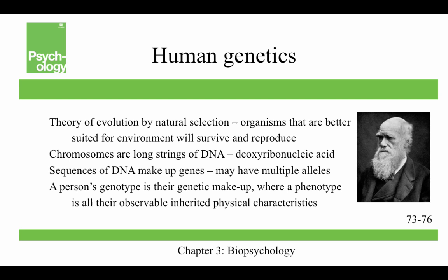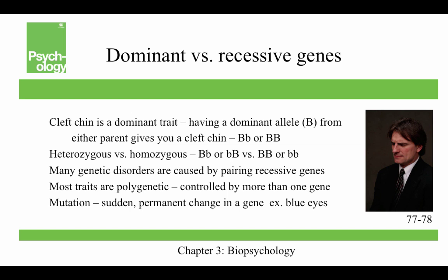An allele is a specific version of a gene. A person's genotype is their genetic makeup, whereas a phenotype refers to all their observable inherited physical characteristics. A good example of this is flamingos — we think of them as being pink, but that's not encoded in the genotype. The food they eat determines whether their phenotype appears white or pink.